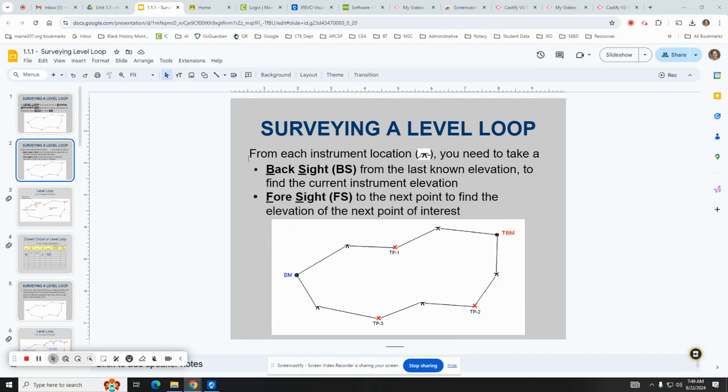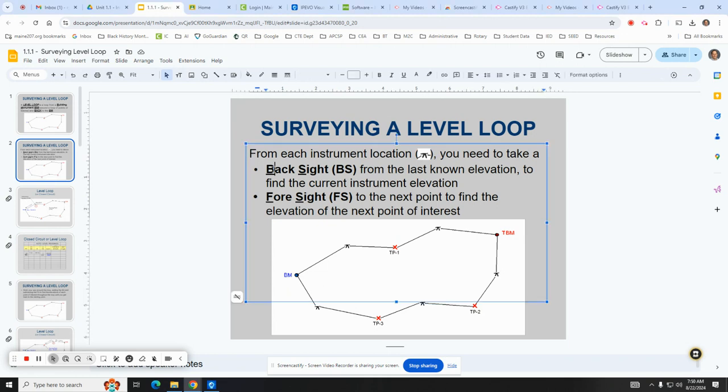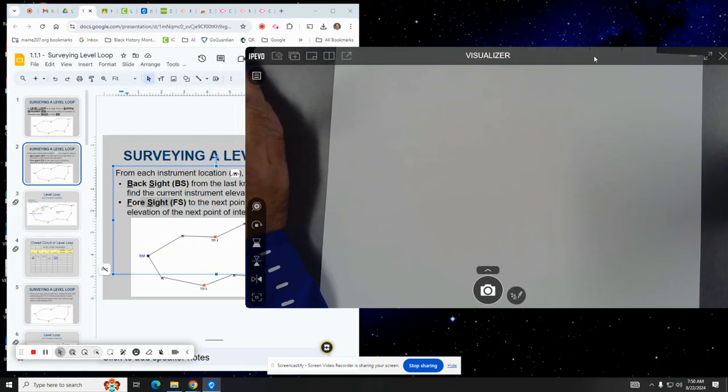As we see here, when you survey a level loop you sometimes have to look backwards or forwards, a back sight or foresight.